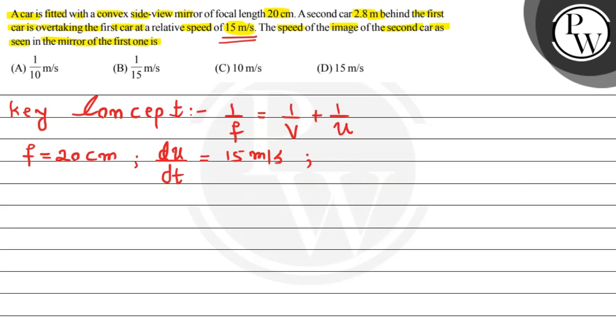Now, the speed of image of this second car as seen in the mirror of the first one is what we have to find here. This means we have to find dv/dt.